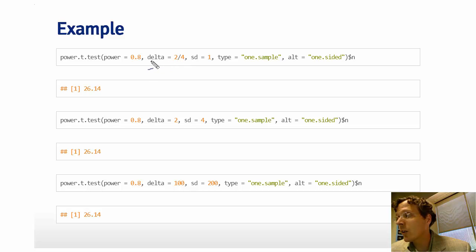So here, I'm specifying delta of 0.5 and my standard deviation of 1, so an effect size of 0.5 divided by 1, or 0.5, and I'm telling power.t.test I'd like to know what is the relevant sample size if I wanted a power of 80%.